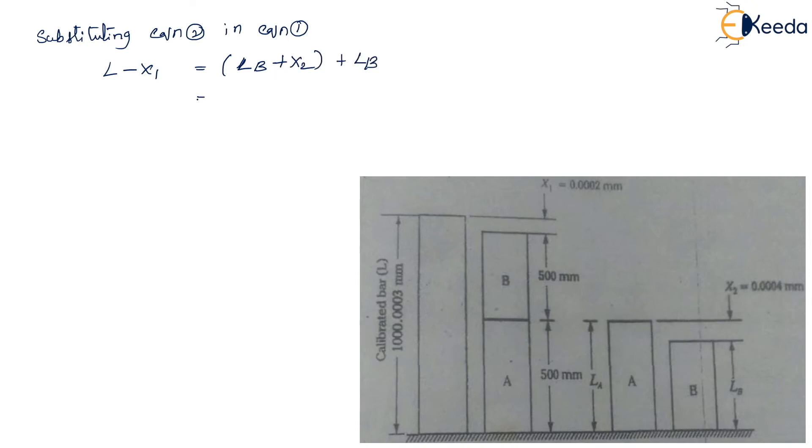So what do we get? 2LB plus x2. So 2LB can be written as L minus x1 minus x2. Therefore LB becomes L minus x1 minus x2 divided by 2.